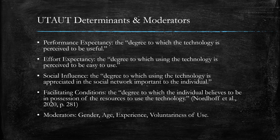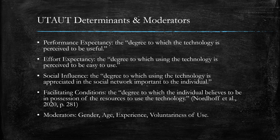UTAUT's creators believe these four determinants and moderators influence people's willingness to accept technological change. Performance expectancy is the degree to which the technology is perceived to be useful. Effort expectancy is the degree to which using the technology is perceived to be easy. Social influence is the degree to which using the technology is appreciated in the individual's important social network. Facilitating conditions are the degree to which the individual believes they have the resources to use the technology. The moderators — gender, age, experience, and voluntariness of use — essentially ask whether a person is being forced to use the technology or has a choice.